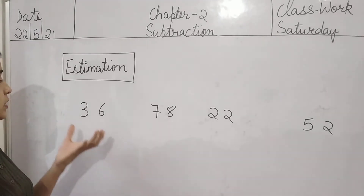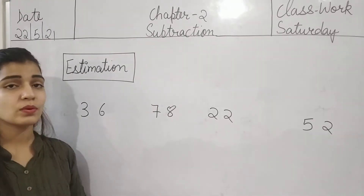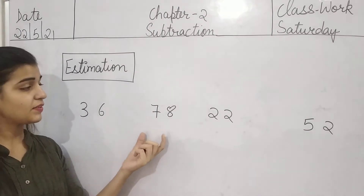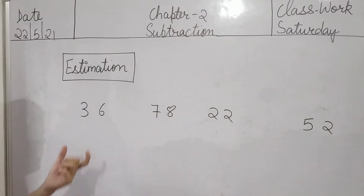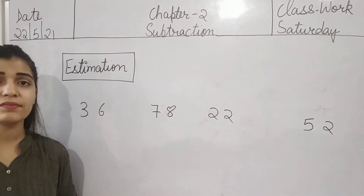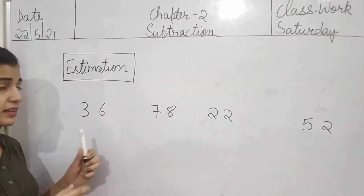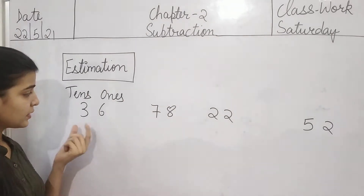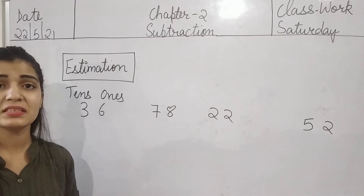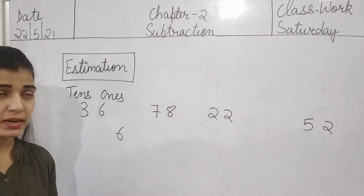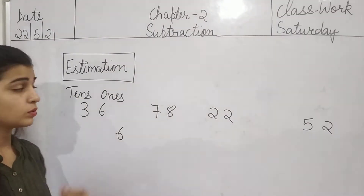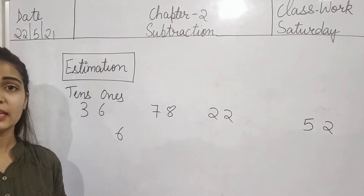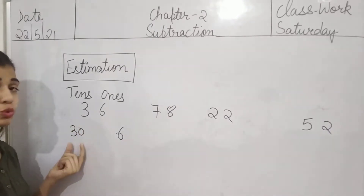Now we will learn how we can estimate these numbers — hum in numbers ko kaise estimate kar sakte hain. I have four numbers: 36, 78, 22, 52. We'll start from the first number, that is 36. This is ones and this is tens. What do you mean by six ones? One ko six times likhna. What do you mean by three tens? Three ko ten times likhna — that is thirty. Thirty plus six is thirty-six. How can we round off this number?